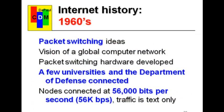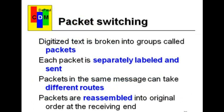If you divide 56,000 bits per second by 8 bits per character, you'll see that it's about 7,000 characters a second, which isn't really very fast by today's standards. Now, the way this works is that instead of having a continuous connection, the text being sent is broken up into groups, and each group could follow a separate path through the network. Each packet is separately labeled and sent, and they could follow different routes. They're reassembled at the receiving end.